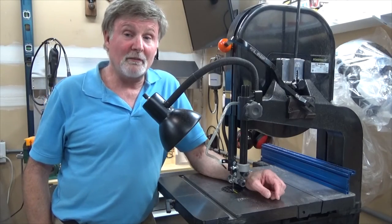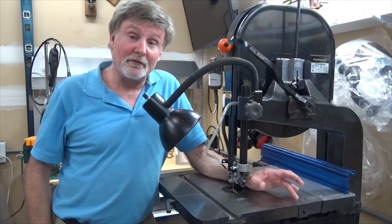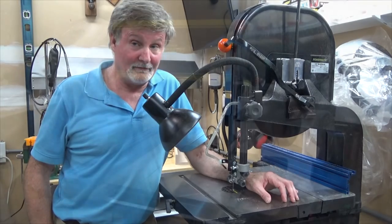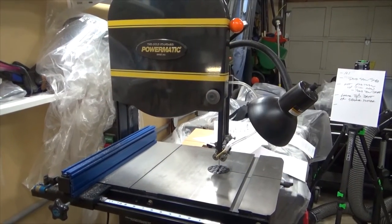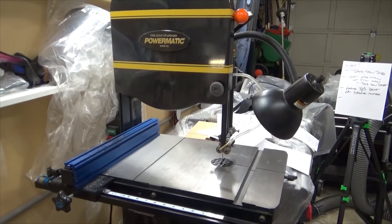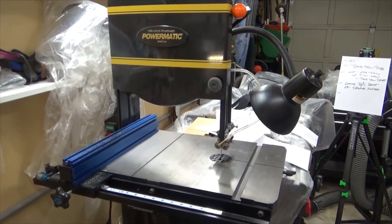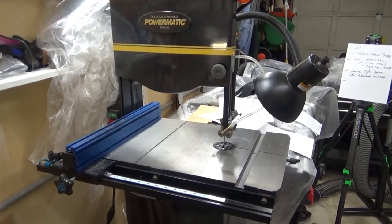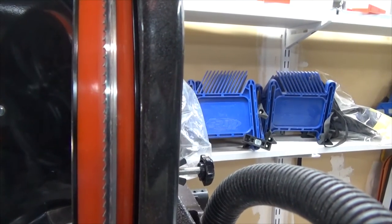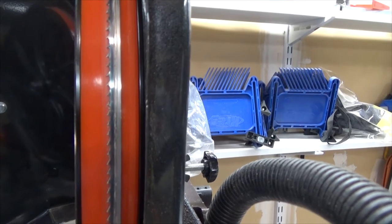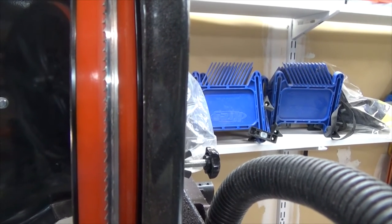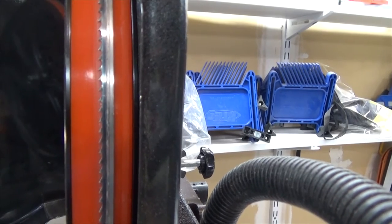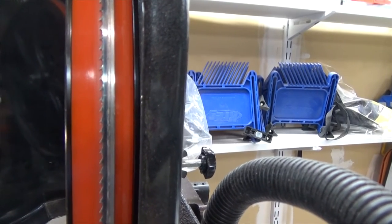Before I demonstrate the bandsaw sled, first I'm going to prove to you how well the bandsaw drift has been eliminated on the saw. For today's demonstration, I'll be using a Powermatic 14 inch bandsaw. But this will work with any size or any manufacturer's bandsaw. My bandsaw is set up as per Alex Snodgrass' video without any compensation for bandsaw drift. If you'll notice, the inside of the gullets of my blade are centered on the bandsaw wheel.